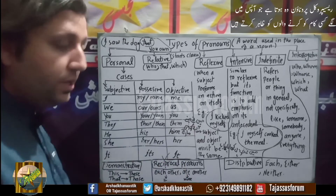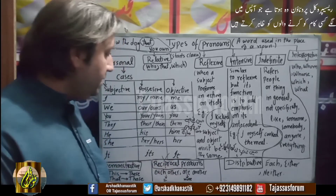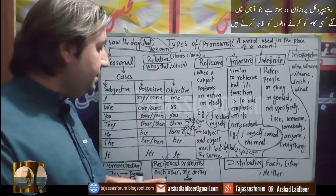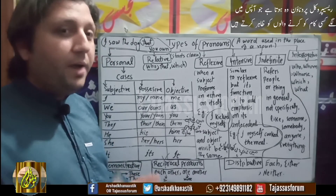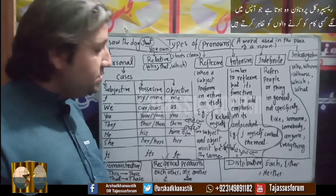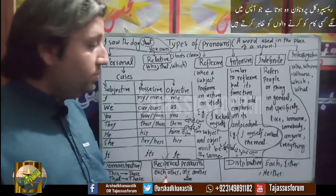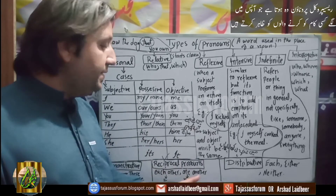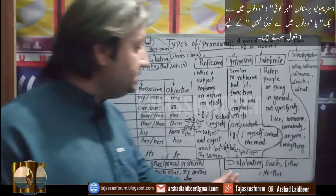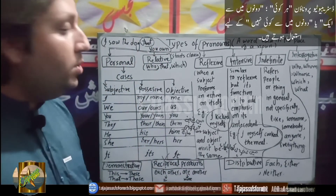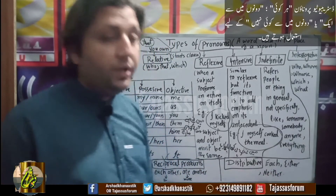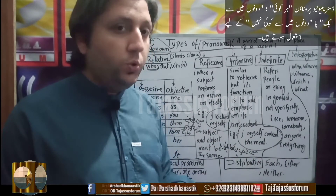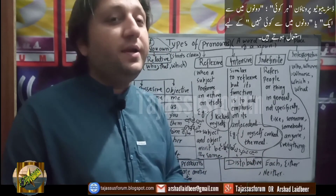The next pronoun is reciprocal pronoun. Reciprocal pronouns are 'each other' and 'one another'. When two persons are there and they are participating in an action in a combined manner, we use 'each other'. 'Each other' is used only in the case of two persons. If there are more than two persons engaging, we use 'one another'. The next kind of pronoun is distributive pronoun. Distributive pronouns are 'each', 'either', and 'neither'. For example: 'each of the boys went to school'.